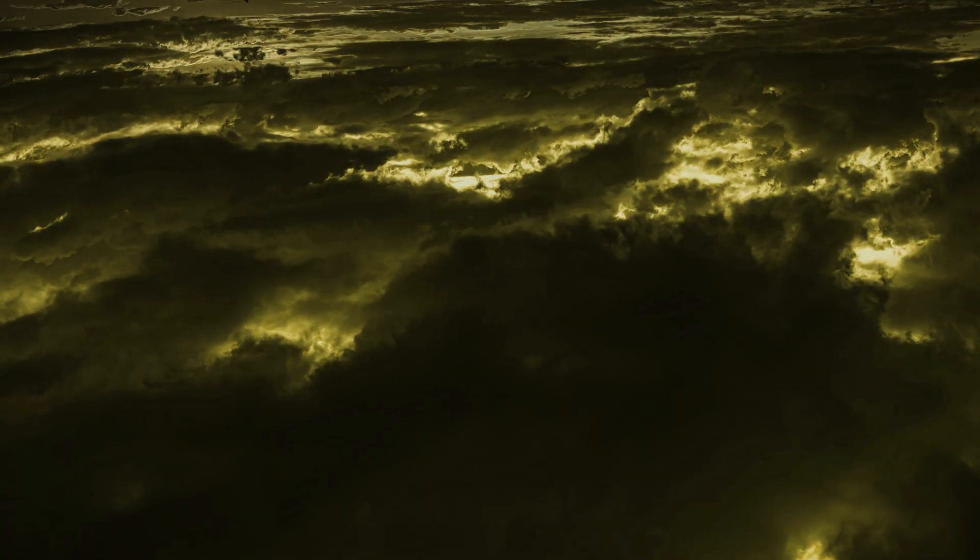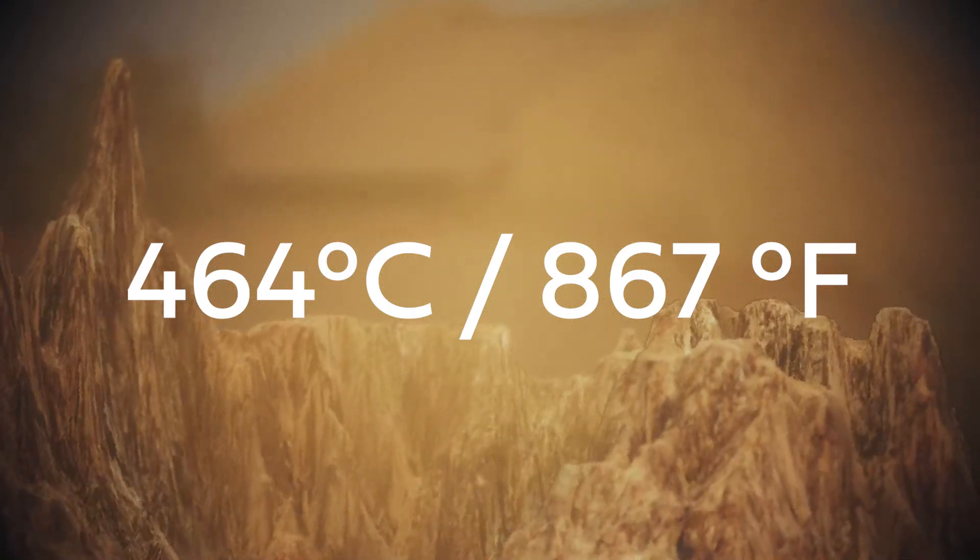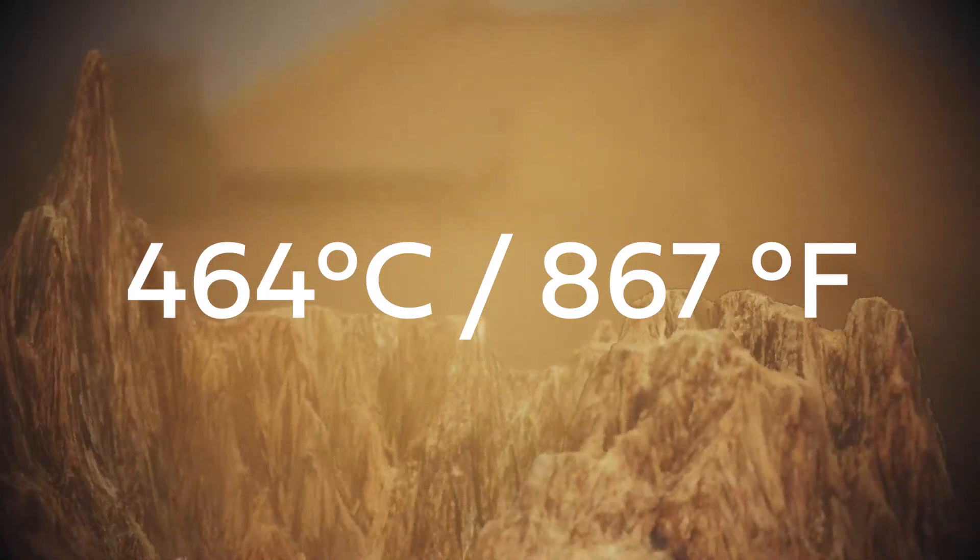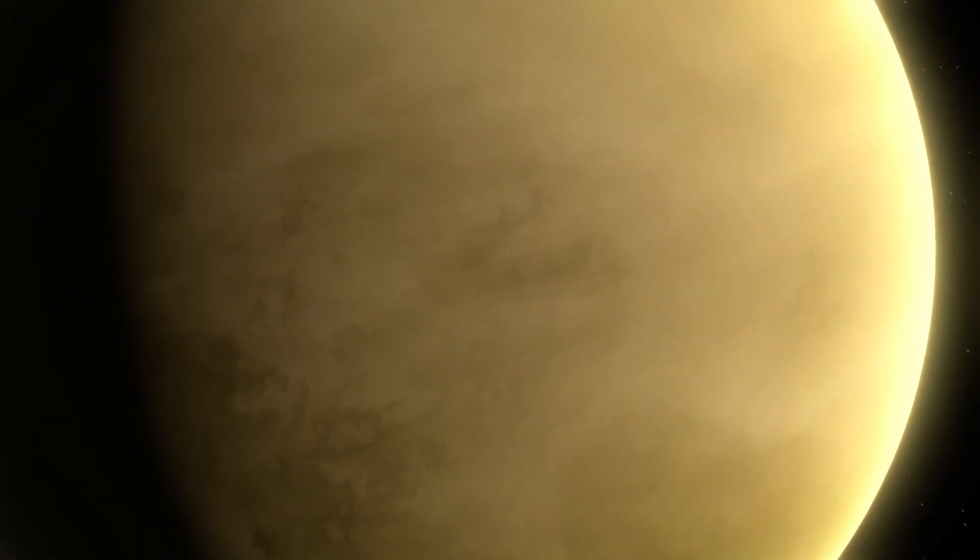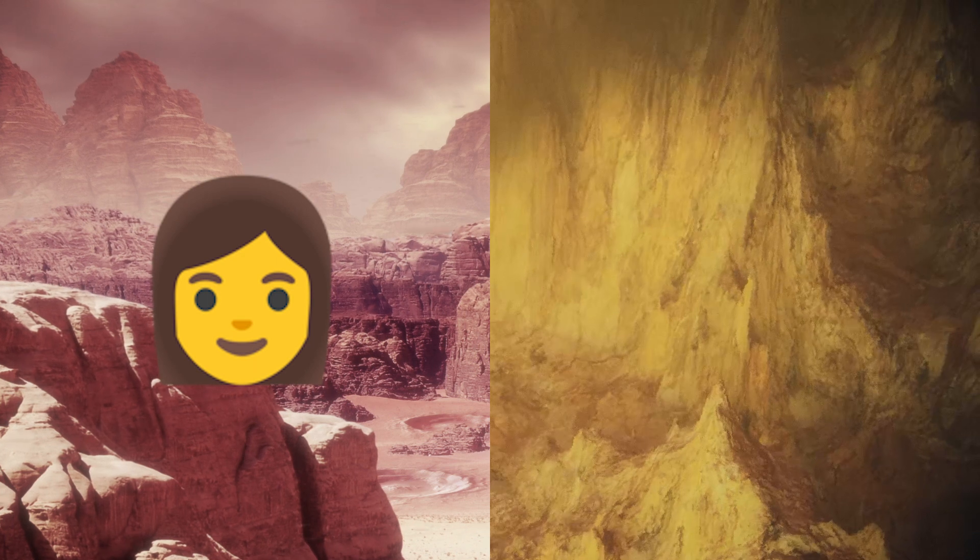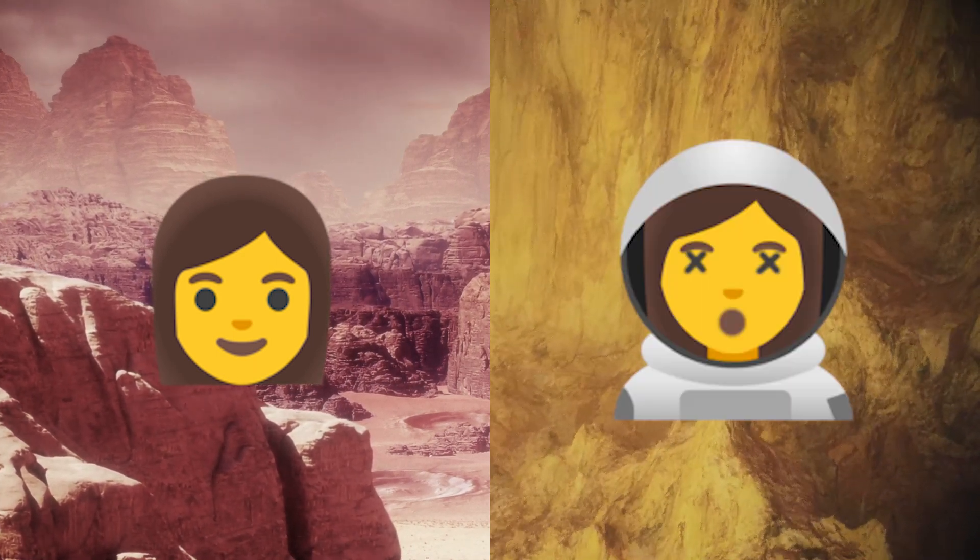If you were to imagine a planet-wide hell, Venus would be pretty close. Its atmosphere is 90 times thicker than Earth's, sulfuric acid rains down in the middle atmosphere, and surface temperatures are a scorching 464 degrees Celsius pretty much everywhere on the planet's surface, from the equator to the poles, day to night. You would last longer on Mars without a spacesuit than you would on Venus with a spacesuit.